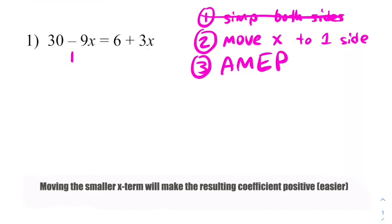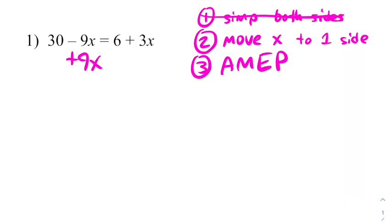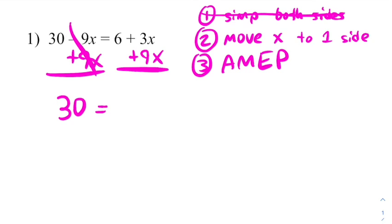So I am going to start this problem by moving the nine x over. It is not wrong to move the three x over, that's just not the way I teach it though. So the nine x is gone, leaving us with thirty equals six plus three x and nine x make a twelve x.